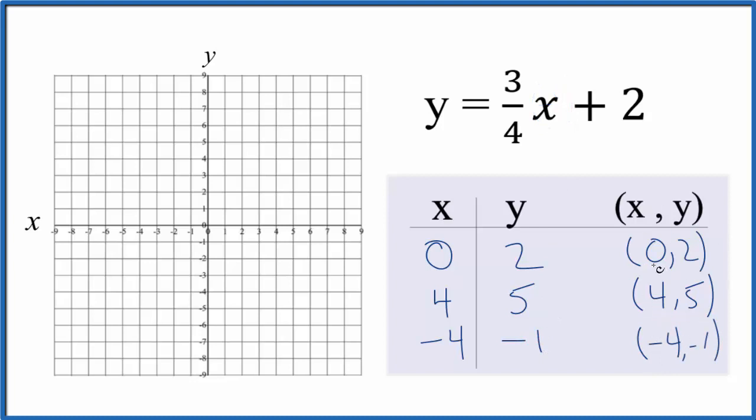And these values here, they'll fit nicely on our graph paper. So let's start out, we have x is zero, y is two. x, that's zero, y is two. We have x is four, y is five. So x is four, y is five.